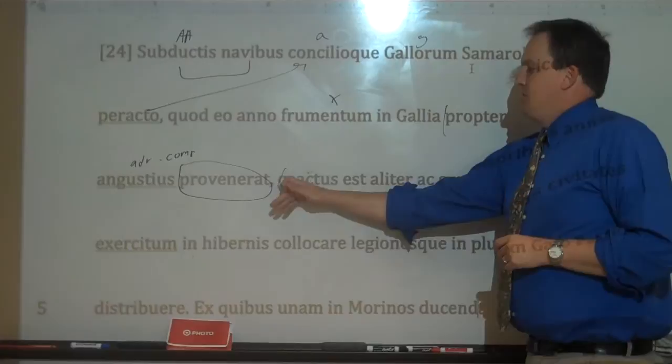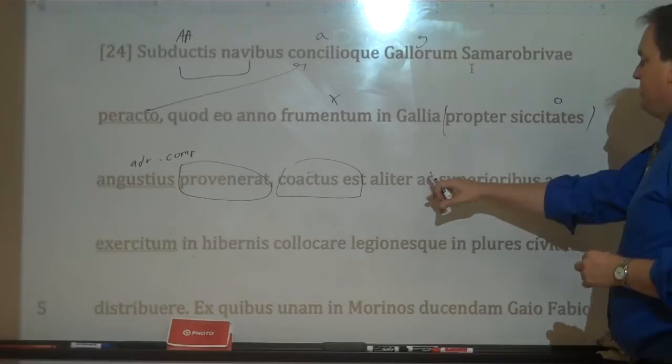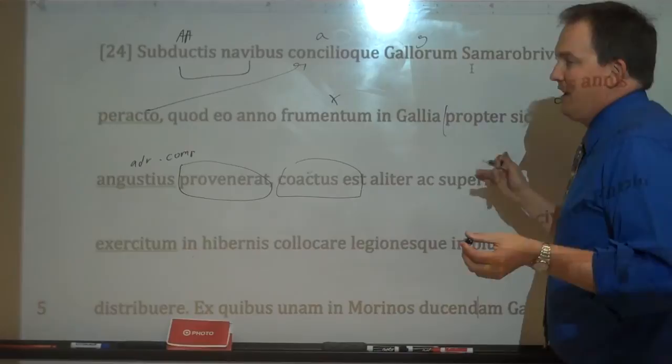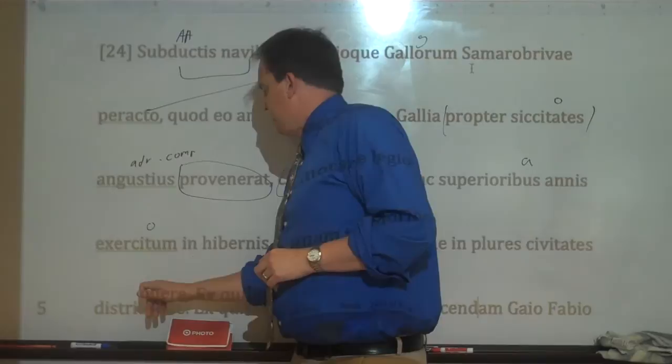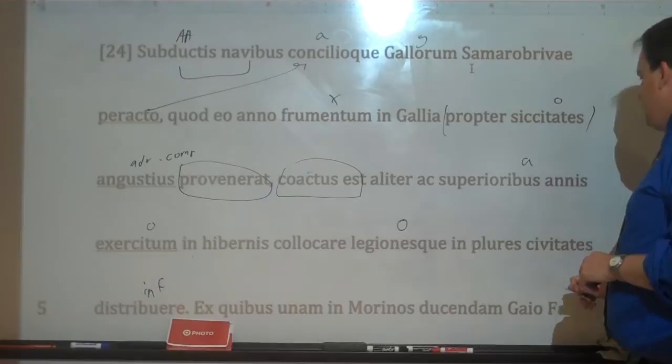'Coactus' — now the question is who is the subject? Of course it's Caesar. He was forced, differently than in earlier years, to place his army in winter quarters, and 'distribuere' — another infinitive going with 'coactus' — to distribute the legions into many 'civitates,' into many states.